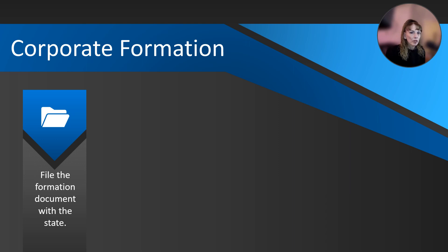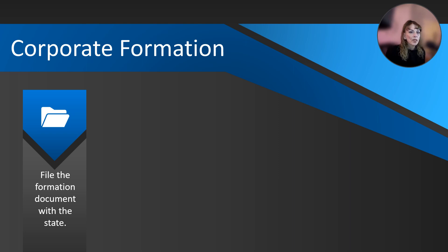The first step in forming your company is to file a corporate organizational document with the state agency that handles corporate filings for your state — that may be the secretary of state in many cases, or in the case of Arizona, the Arizona Corporation Commission. Typical names for the organizational document are articles or certificate of organization for a limited liability company, or a certificate or articles of incorporation for a corporation. This depends on the state in which you form your entity, but the names are pretty similar throughout.